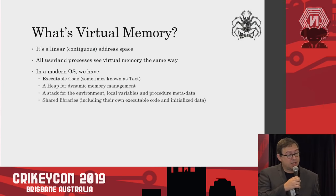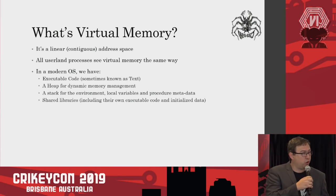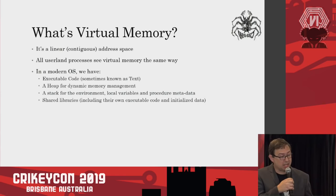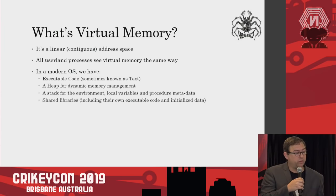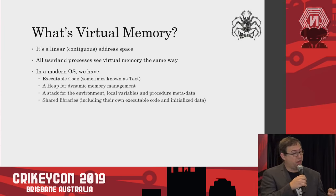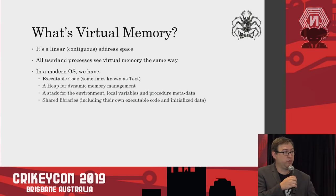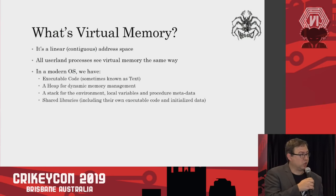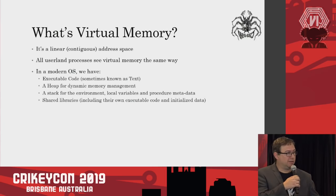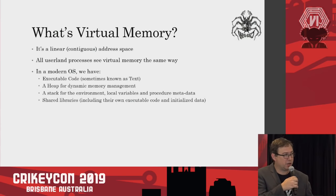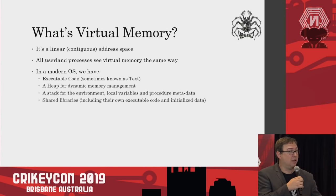All user land processes see virtual memory the same way. In a modern operating system, a process has executable code — sometimes known as the text segment — a heap for dynamic memory management, typically a stack that includes things like the environment, local variables, and procedure metadata. Within that address space it's all virtual memory, and there are shared libraries as well. When you run a program it will almost certainly use libc and other shared libraries, mapped into the address space. Due to the magic of copy-on-write, you don't need physical copies of that back-end memory — the OS kernel handles that transparently.